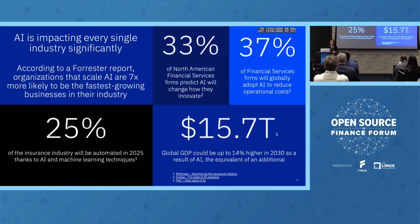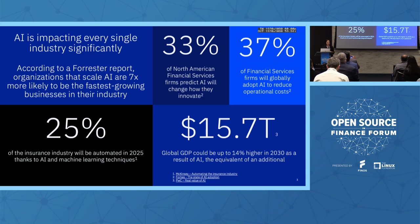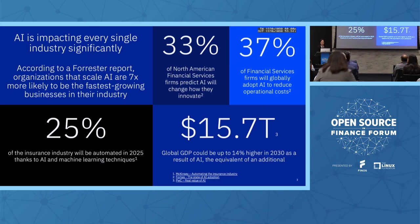AI is impacting every single industry — we all see AI in almost every day's life. Based on McKinsey's report, 25% of the insurance industry will be automated in 2025 thanks to AI and machine learning. Based on Forbes, 37% of financial services firms will globally adopt AI to reduce operational cost, and 33% of North American financial service firms predict AI will change the way they innovate. Based on a PWC report, global GDP will be up to 14% higher in 2030 as a result of AI — the equivalent of an additional $15.7 trillion.